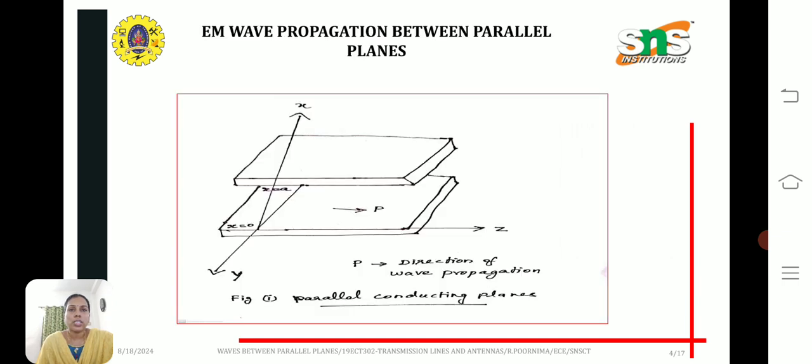We are going to consider electromagnetic wave propagation between parallel planes. Here the direction of wave propagation is along the z direction and the boundary is taken as x equal to 0 and x equal to a in the parallel conducting planes.